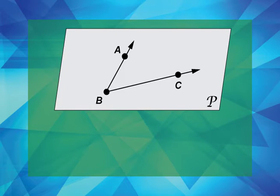In this illustration, two rays intersect at a point. Points A and B are on one ray, and points B and C are on another ray.